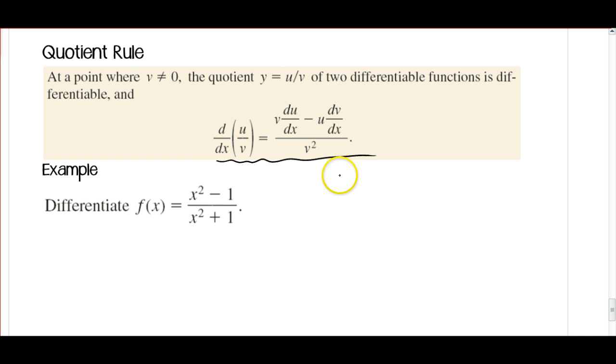So again, I'm going to write down all my parts here. So for u, I'm going to have x squared plus 1, and for du/dx, I'm going to differentiate that. That's going to be 2x. And then for v, I'm going to have x squared plus 1.